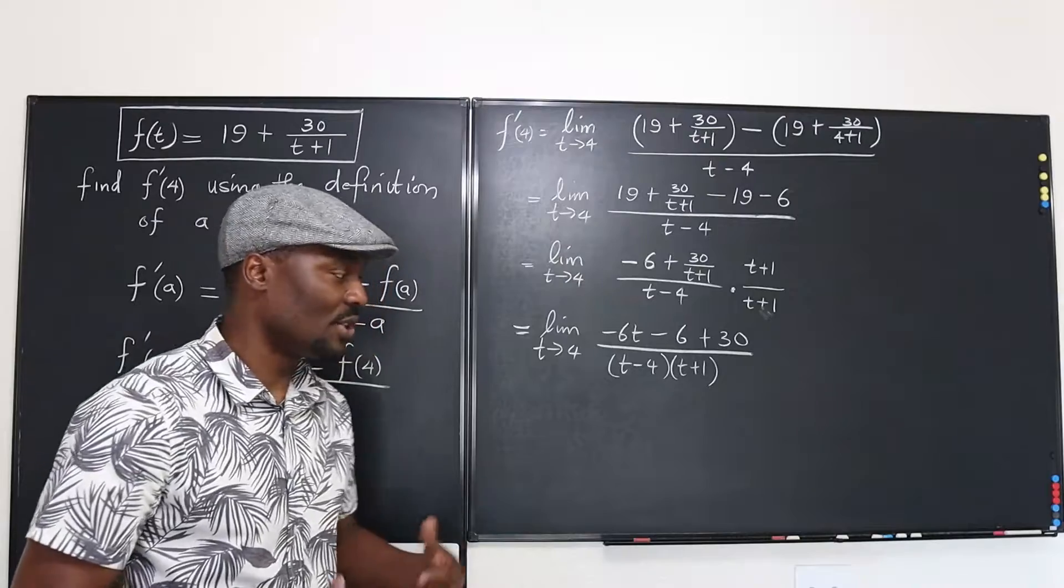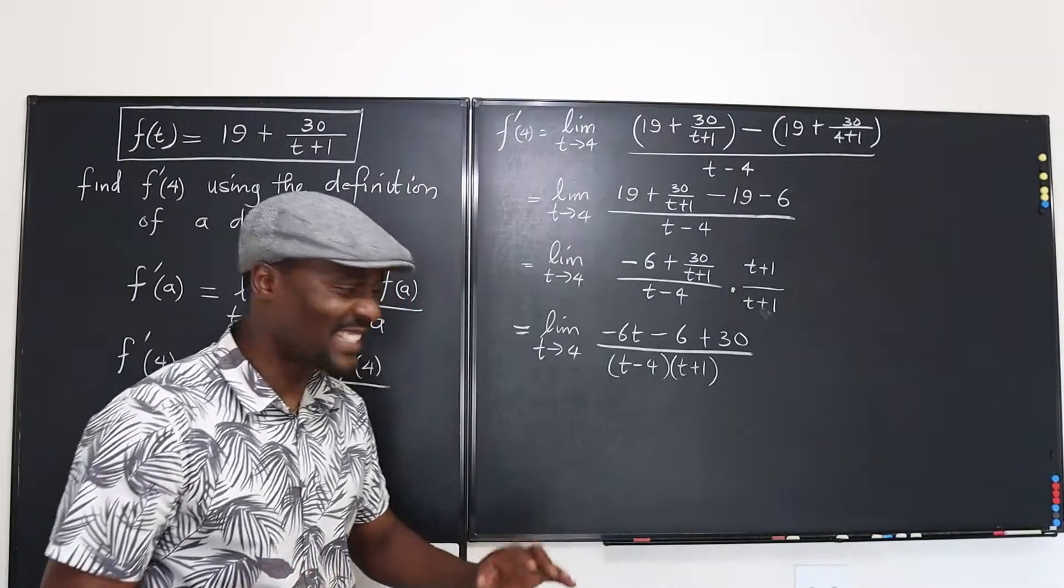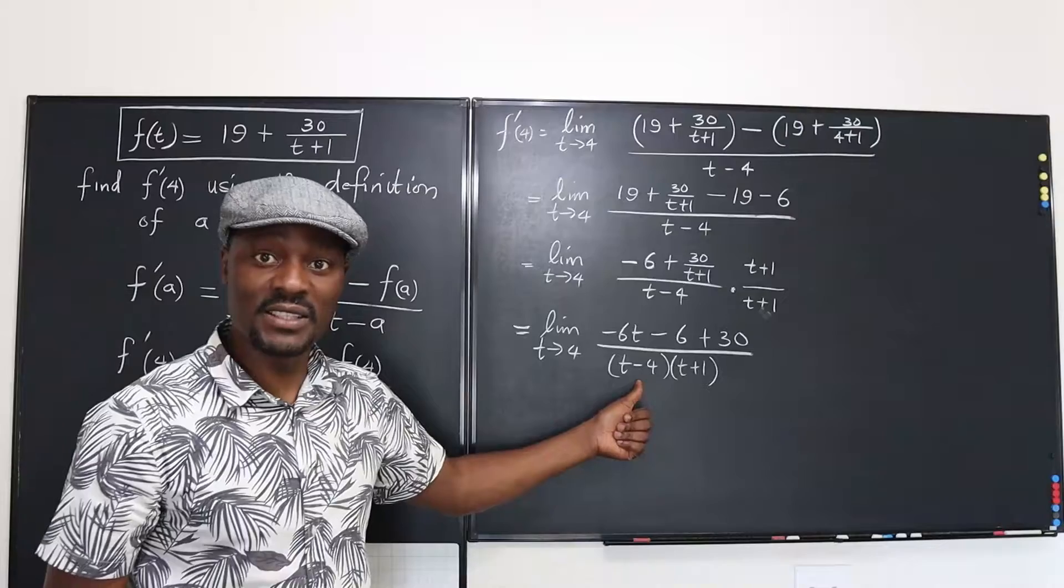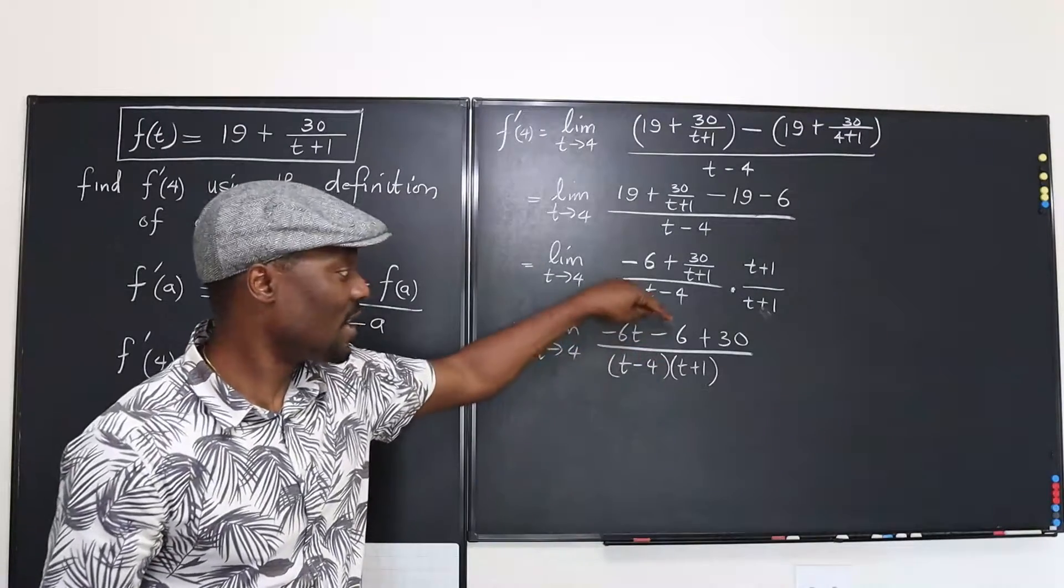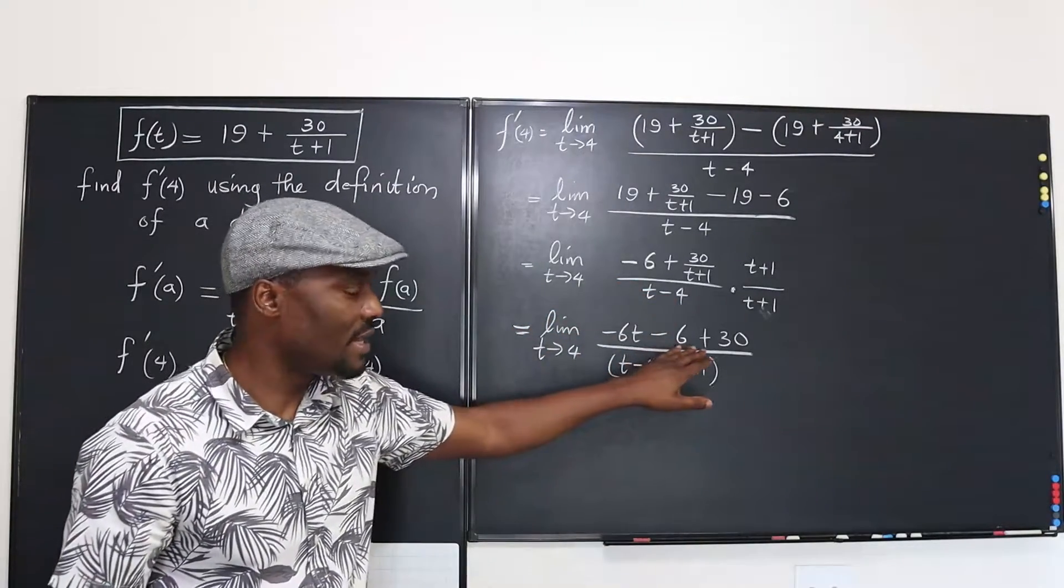So remember I told you there's still some algebraic manipulations to do? Yes, because we need to get rid of this thing giving us a zero in the denominator and it's going to come from the top. Now look at what you have in the top right now.